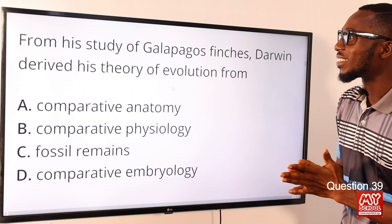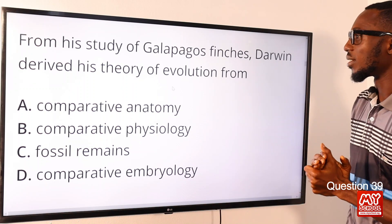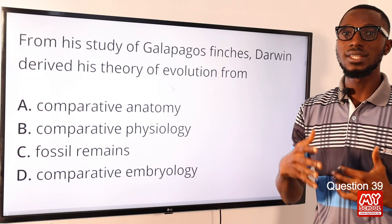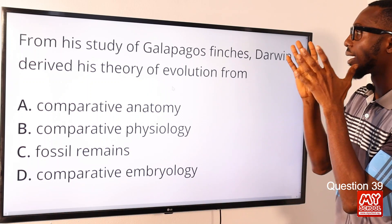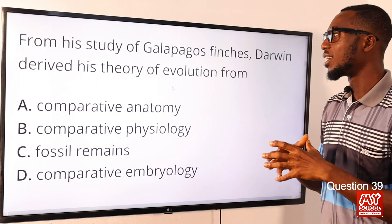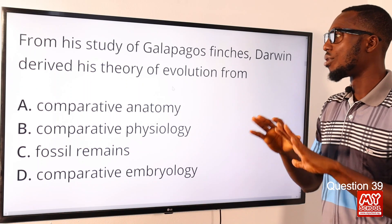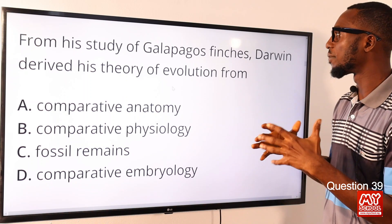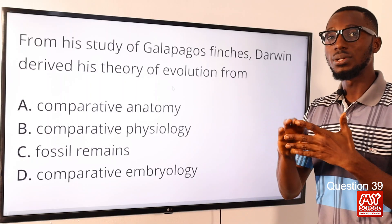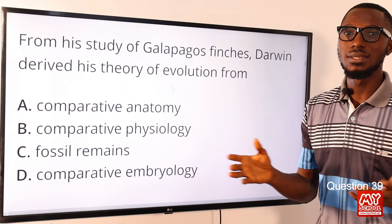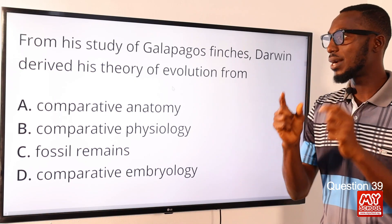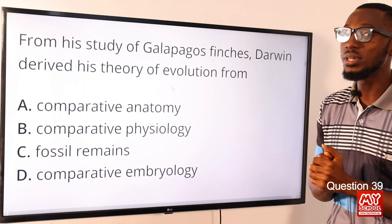Question 39. From the study of Galapagos finches, Darwin derived his theory of evolution from comparative physiology — we are talking about functional characteristics. These Galapagos birds migrated from the mainland to the islands, and due to the different environmental setup, different kinds of finches emerged: those that feed on nectar, those on nuts, those on insects, and those on seeds. This is a clear demonstration of comparative physiology and functional characteristics, obvious from their beak differences. The correct option here is option B.